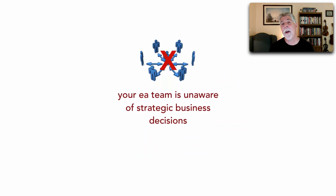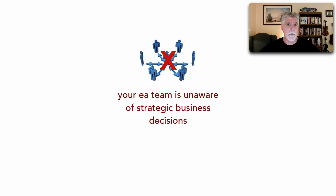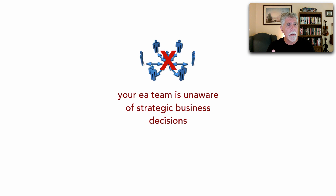Another warning sign is that your EA team is unaware of strategic business decisions being made — for example, a major merger or acquisition, or a change in company direction — and the enterprise architecture team is completely unaware. This is a direct result of those unidirectional lines and silos I showed earlier, rather than bi-directional collaborative communication.